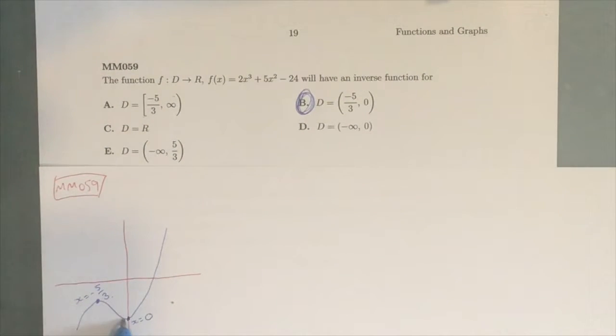So basically what you want to do is find where the turning points are, and then work out this little sketch down here, and see exactly what would create a one-to-one function, and that's your answer.